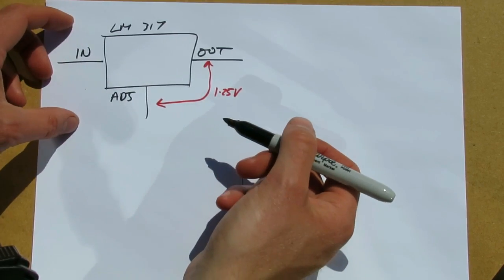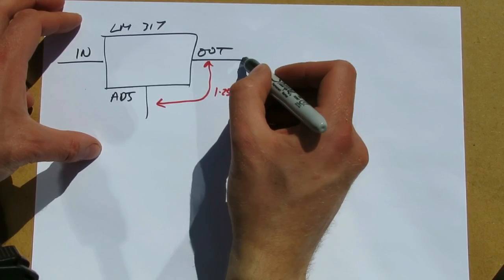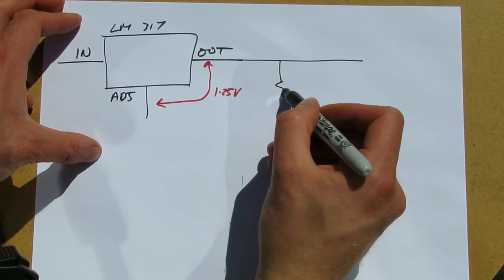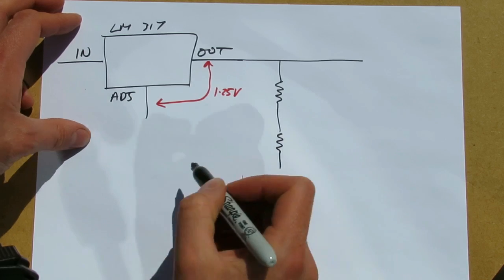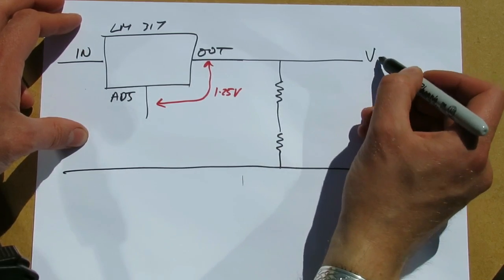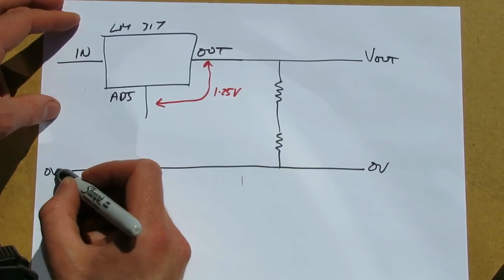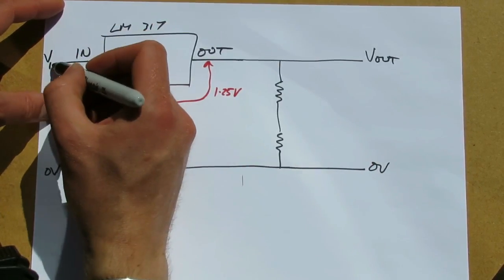For example, you can make a voltage regulator as follows. Vout, that's 0 volts down there, that's Vin.